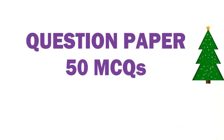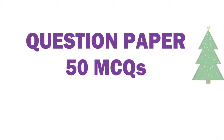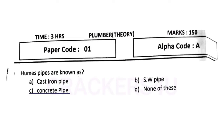Dear friends, today we are going to discuss 50 multiple choice questions and answers. Question number one: fumes pipes are known as — answer option C, concrete pipe.